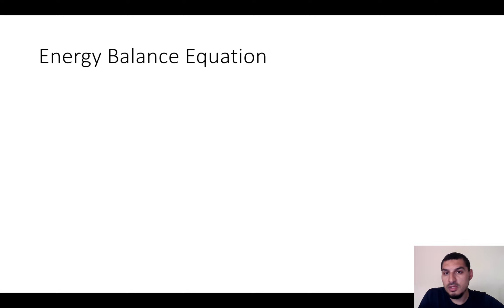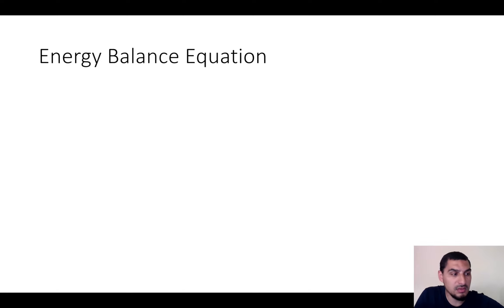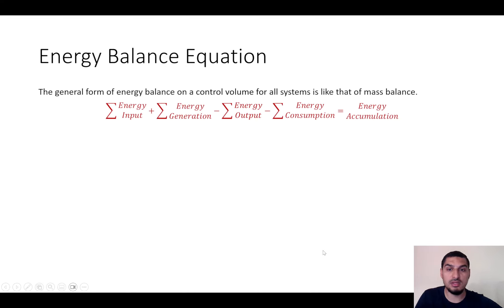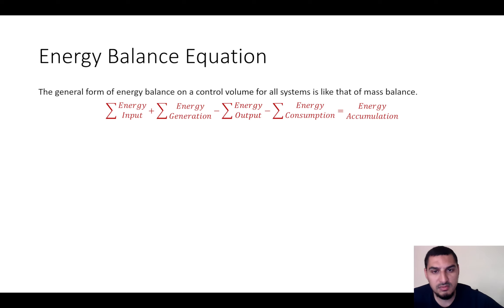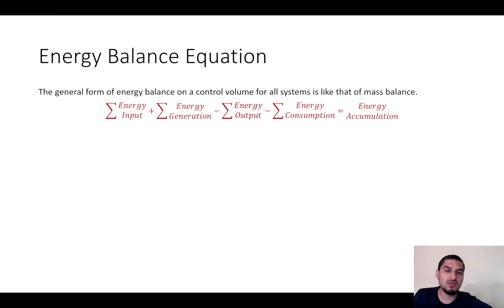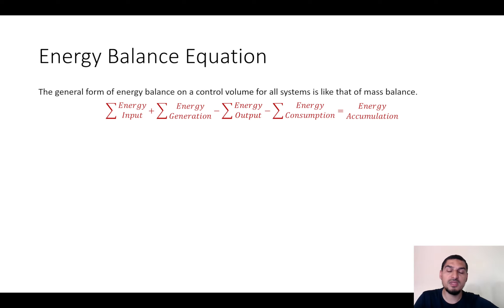We are going to start talking about the energy balance equation and put everything together. The principle we build our equation on is the conservation of energy, dealing with different forms of energy. We first set a control volume. The general equation is similar to conservation of mass: energy input plus energy generated minus energy output minus energy consumed equals energy accumulated. This is the general form of the conservation of energy equation.